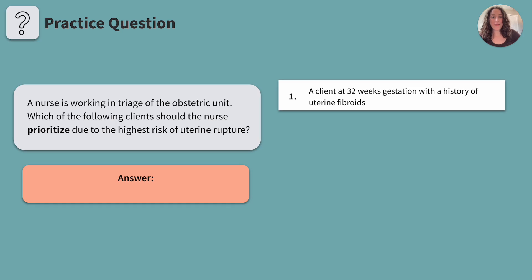Option one: a client at 32 weeks gestation with a history of uterine fibroids. Uterine fibroids can increase the risk of complications during pregnancy and labor as they distort the uterus's ability to contract, but they are not a direct cause of uterine rupture. The presence of uterine fibroids does make this client someone to pay closer attention to, but since this isn't a direct cause of uterine rupture, let's keep this option in mind and keep reviewing for a more applicable answer choice.